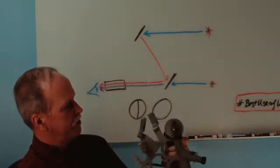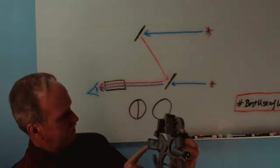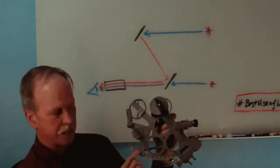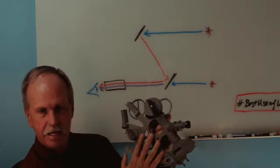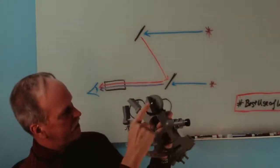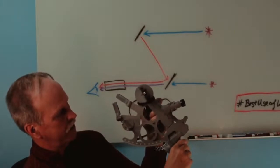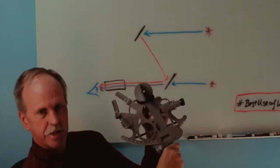Now, here's the way a sextant works. This mirror is attached to the body of the sextant. This is called the arch. This is the body of the sextant. This mirror is attached to an armature that can move. And as you can see, you just move it like that.